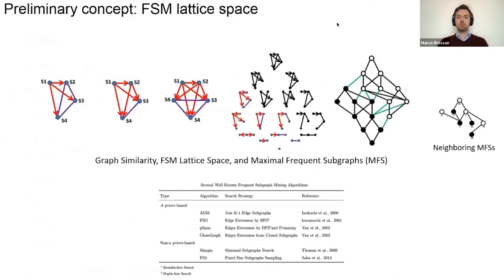Frequent subgraph mining is a traditional topic in the graph mining field. For example, given three graphs, we're trying to identify the largest common part shared among them. For example, this is the subgraph shared in all three input graphs.